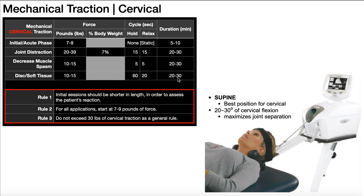In terms of the setup for cervical mechanical traction, the best position is supine. When doing traction on the cervical spine, the person's neck needs to be about 20 to 30 degrees in cervical flexion — basically bent forward. In that position of flexion, it open-packs the cervical spine a little bit, which maximizes joint separation when you apply the traction. You don't do it in neutral; you want about 20 to 30 degrees of cervical flexion. Cervical mechanical traction is only done in supine.